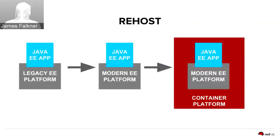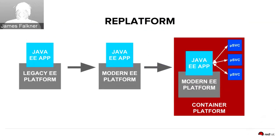Rehosting is taking an existing app — say a Java EE application on a legacy platform like WebLogic or WebSphere — and moving it to a modern EE platform like JBoss EAP and then onto a container-based orchestration platform like OpenShift, where you gain advanced deployment and CI/CD techniques with virtually no changes to the application itself. Replatforming does the same thing but starts replacing functionality using advanced techniques like microservices to bring additional business value and the ability to get bits to production quicker.